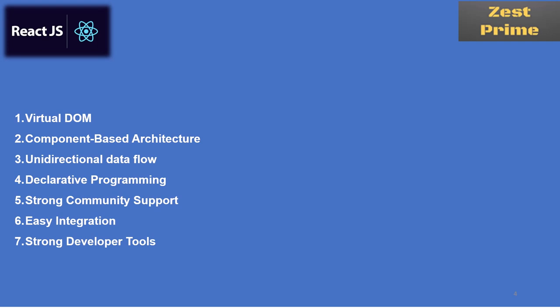The sixth point is ease of integration. React.js is a JavaScript library, so you can easily integrate other frameworks and JavaScript libraries into your React.js project. For example, you can use Redux patterns, Bootstrap, and many other JavaScript libraries — integrating them easily into your React.js application.